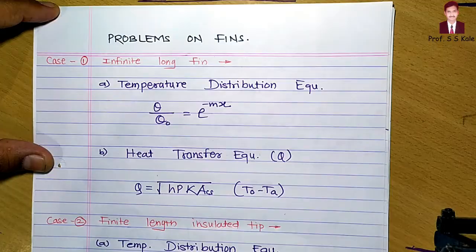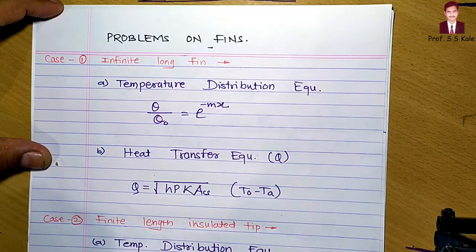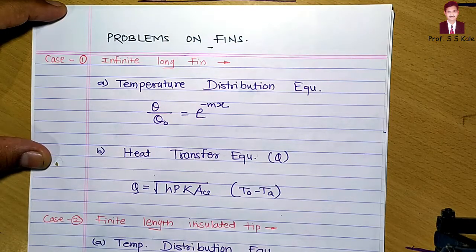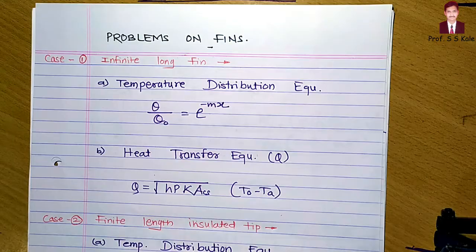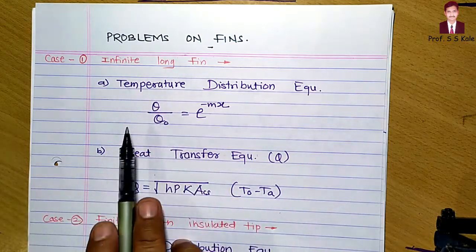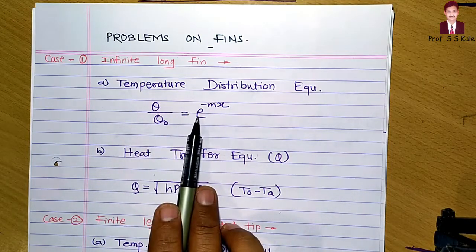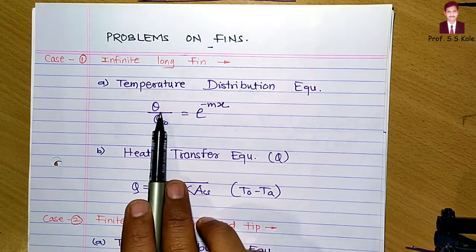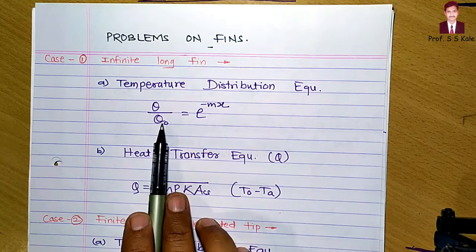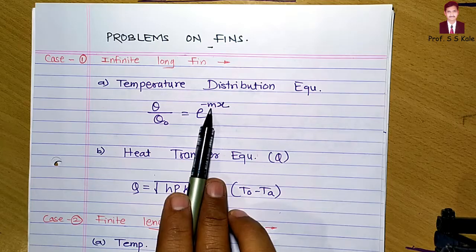We have derived the formulas for all three cases. When solving problems on fins, you must know all the formulas. The temperature distribution equation for the infinite long fin is: theta divided by theta-zero equals e raised to minus mx. Here, theta is T minus T_a, theta-zero is T_0 minus T_a, and m is the square root of hP divided by kA.